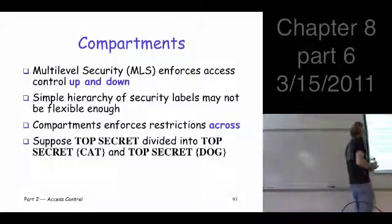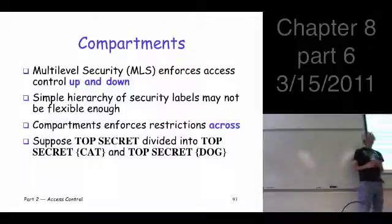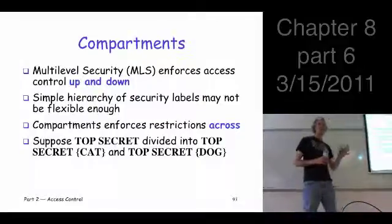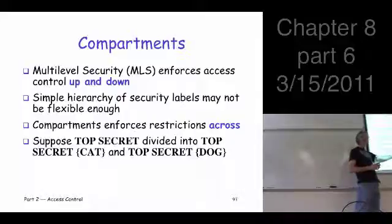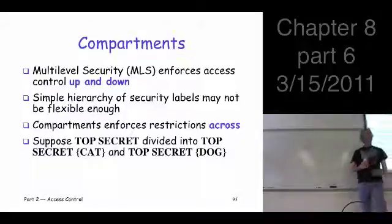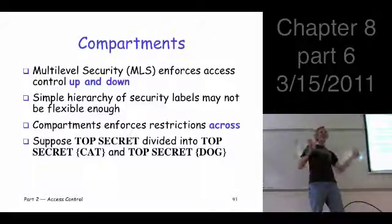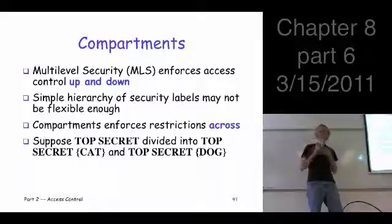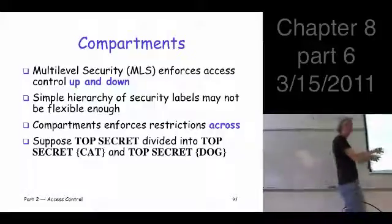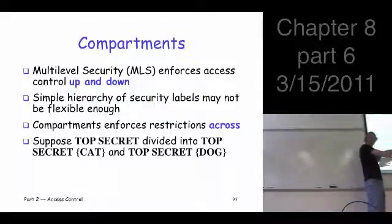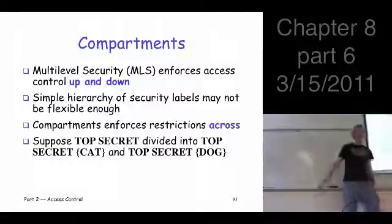For example, suppose we have a project that's top secret. We'll put it in its own compartment called 'cat.' There's another project — we'll put it in its compartment called 'dog.' Cat and dog don't have to have anything to do with each other, so we keep them separate. If you know something about the top secret cat project, you're not supposed to tell it to ordinary top secret people or top secret dog people. Just top secret cat. That's the idea.